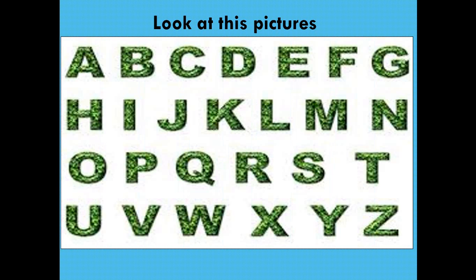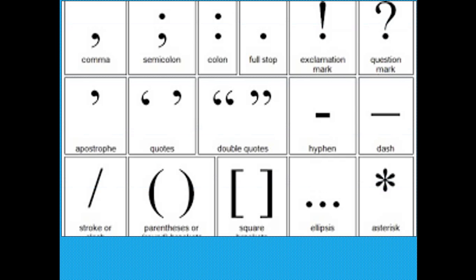At first, look at these pictures, students. What can you see? You can see some alphabets and capital letters. Now, look at the chart. You can see some punctuation marks such as comma, semicolon, colon, etc.